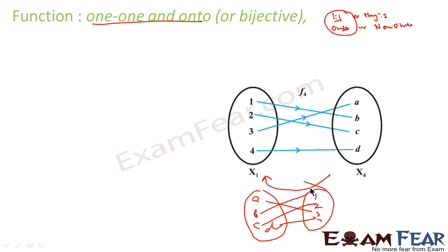If the function is non-onto, some orphan element will appear and there will be no definition for it, so it is not invertible. Also, if there are two elements pointing to the same element — that is many-to-one — you cannot invert it either. In that case, inverting would give one value producing two outputs, which is not possible for a function.